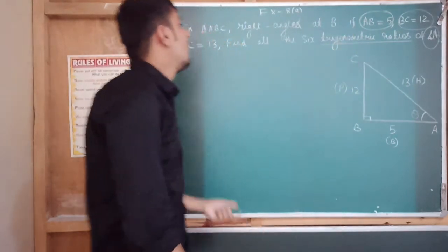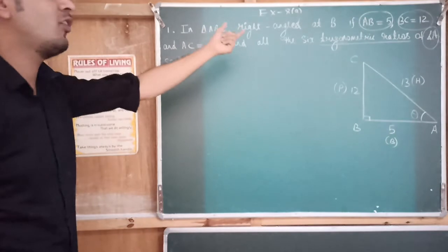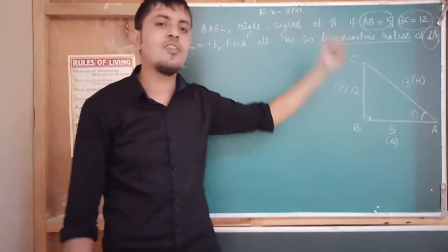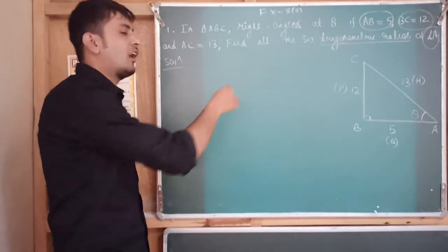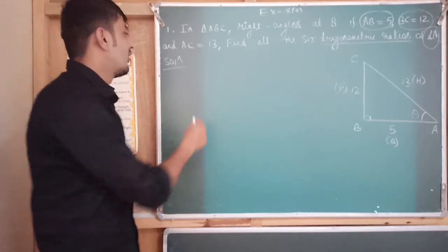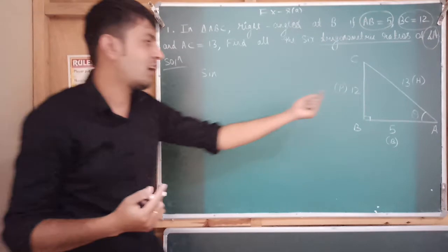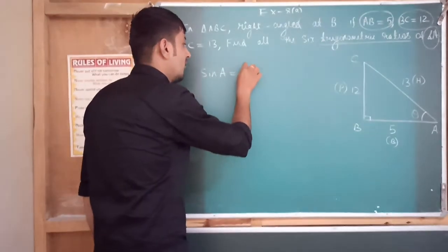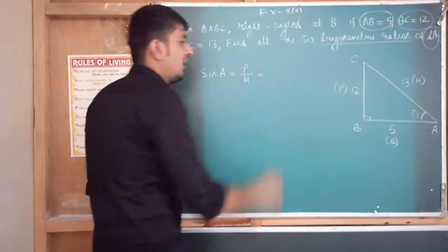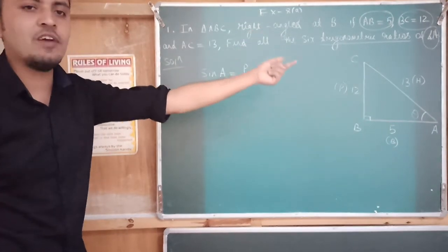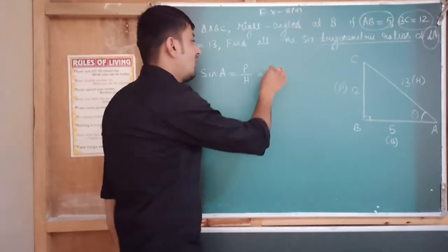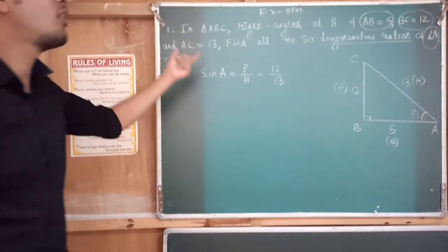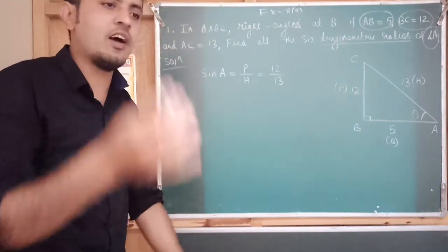Now let us come to the solution. They asked us to find all six trigonometric ratios of A. The first one is sine A. Sine A equals perpendicular over hypotenuse (P/H). The value of P is 12 and the value of H is 30, so sine A equals 12 over 30. That's the first trigonometric ratio.